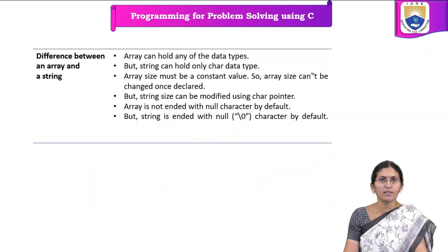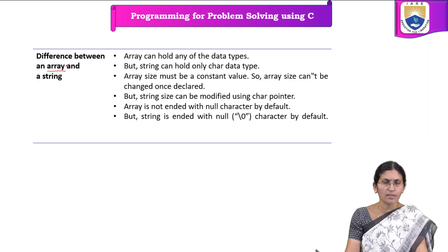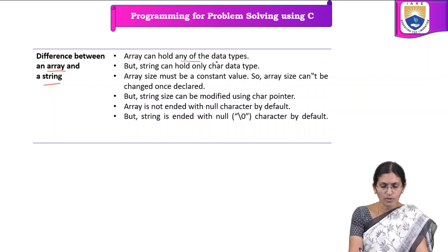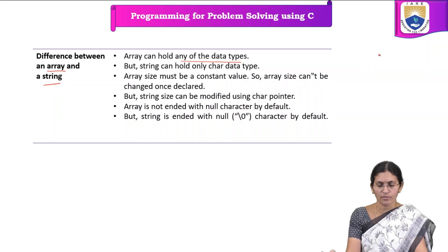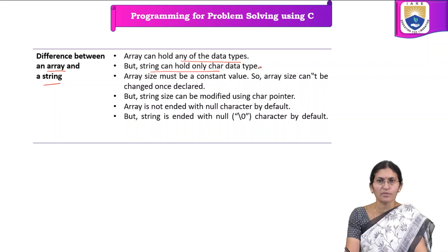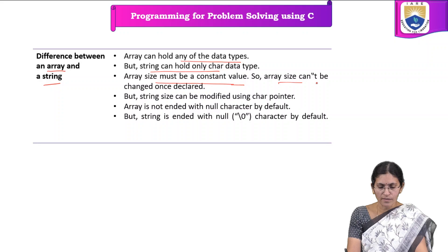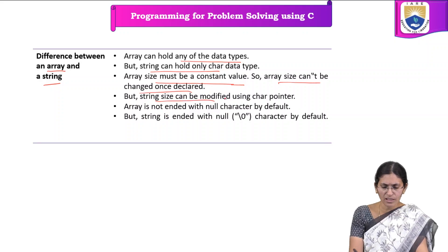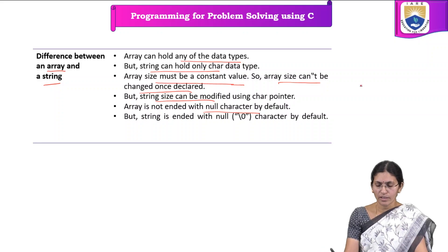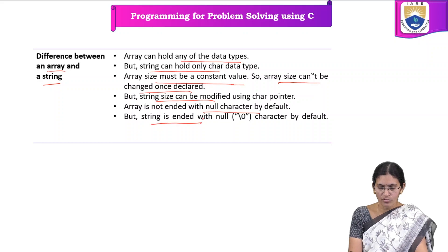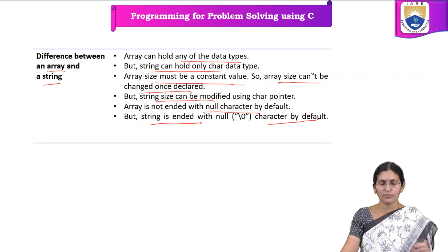The main difference between array and string is that an array can hold data of any type — integers, double, etc. — whereas a string can hold only char data type. Array size must be a constant value and cannot be changed once declared, but we can change the size of a string by using a character pointer. Array is not ended with a null character by default, whereas a string is ended with a null character by default.